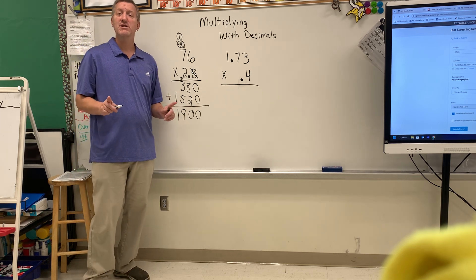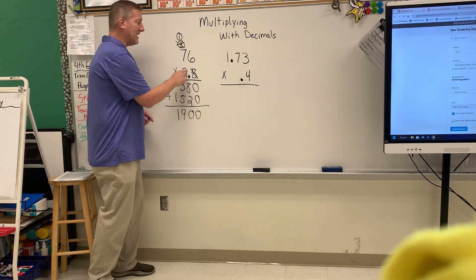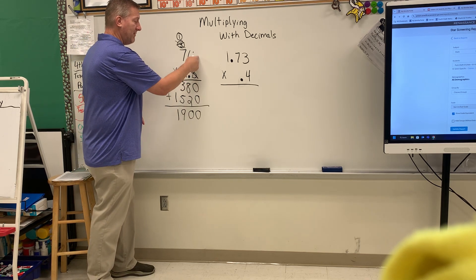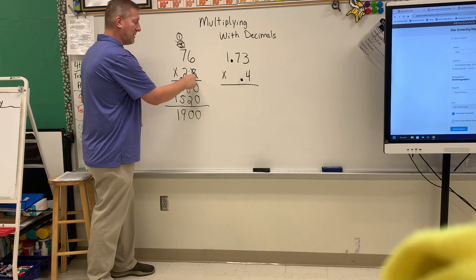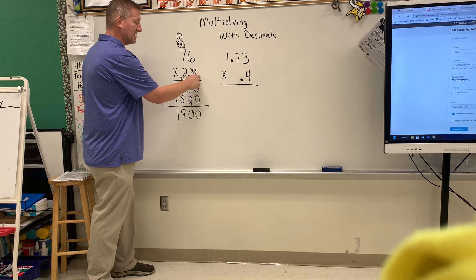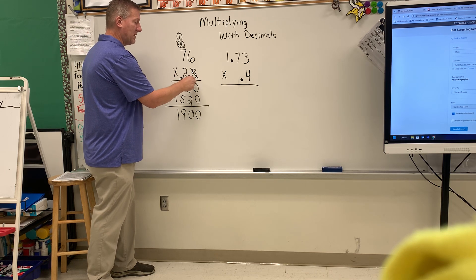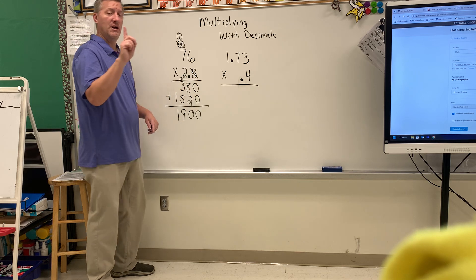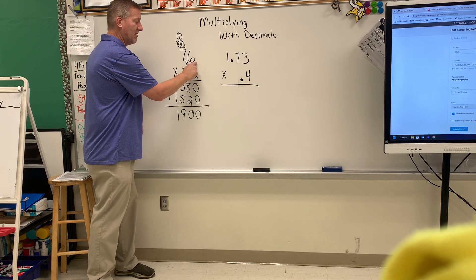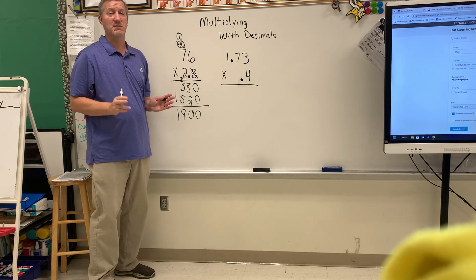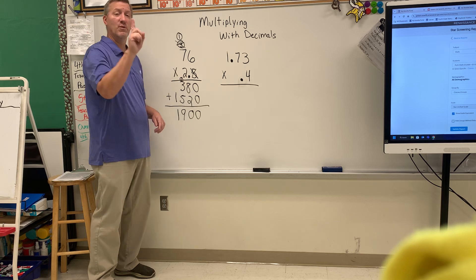Okay now here's where you have to deal with the decimal. So you go back up to your problem. If you were starting here at the right hand side, how many spots is the decimal in? So here it's one spot. Here the decimal is right here, so it hasn't moved at all. This one's moved one spot.